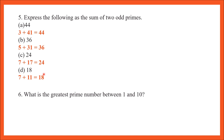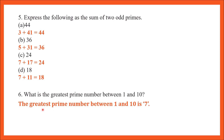Question number 6: what is the greatest prime number between 1 and 10? List all prime numbers between 1 and 10, then find the greatest. The greatest prime number between 1 and 10 is 7, because 8, 9, and 10 are all composite numbers.